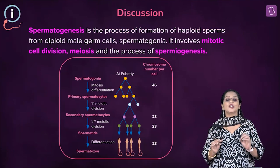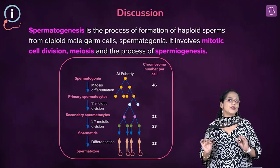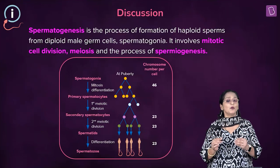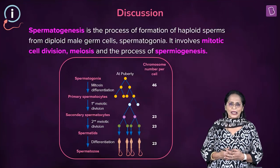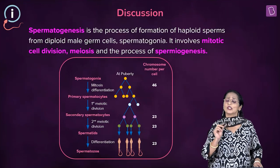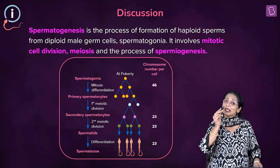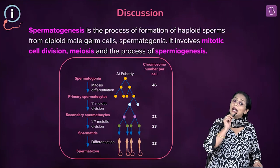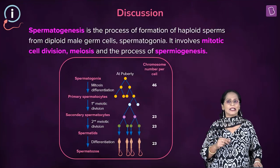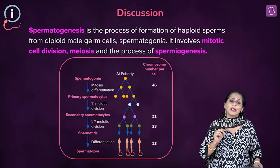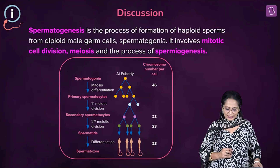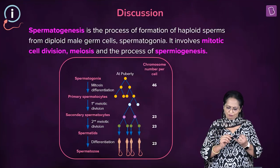First, we need to understand what spermatogenesis is. Spermatogenesis is the formation of sperms, which are formed in the testes in the male reproductive system. In the testes, there are highly coiled tubules called seminiferous tubules, lined by germ cells or spermatogonia, which are diploid, and Sertoli cells or nurse cells. These spermatogonial cells undergo meiosis to form four sperms — that is spermatogenesis.